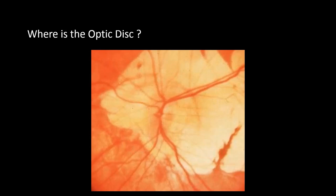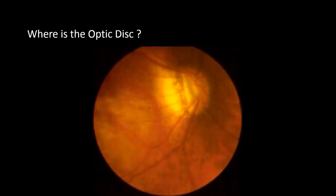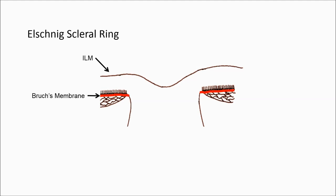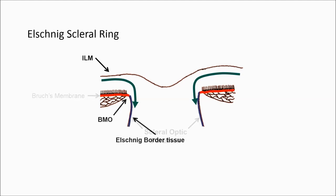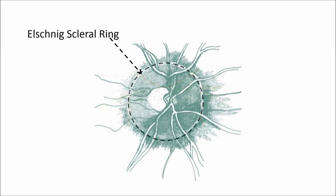The first step in examining the optic disc is to find it. The transparent optic nerve fibers exit the eye through the scleral optic foramen. The sclerosponge represents the margin of the scleral optic foramen, referred to by the ophthalmoscope as the scleral ring or the elschnig scleral ring. Clinically speaking, everything inside the scleral ring is optic disc and everything outside it is retina. Once you've seen the ring, you are looking at the optic disc.